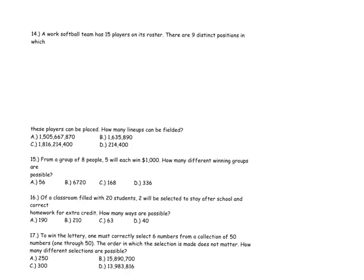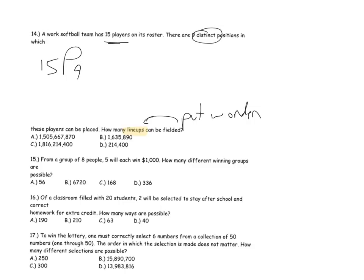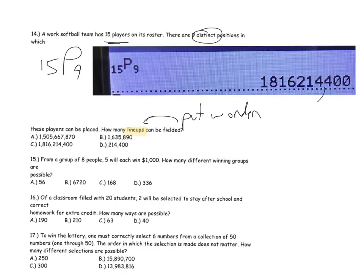Problem fourteen: a work softball team has 15 players on its roster and there are nine distinct — meaning different — positions which players can be placed. How many different lineups? To line up means to put in order, so order matters and it's a permutation. With 15 players and nine positions, it's 15P9, and the answer is letter C: 1,816,214,400.